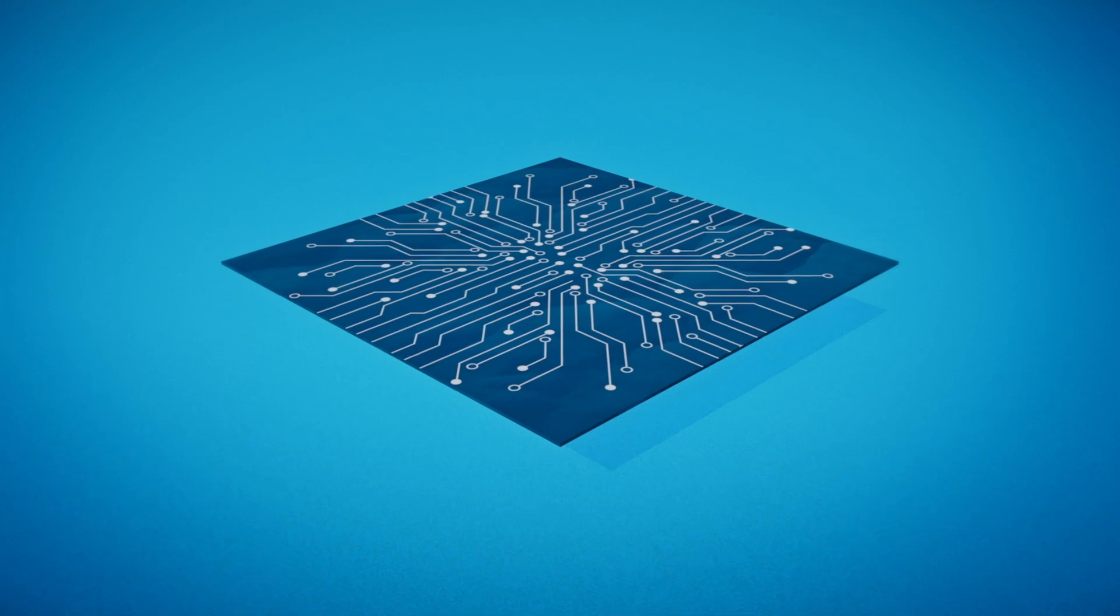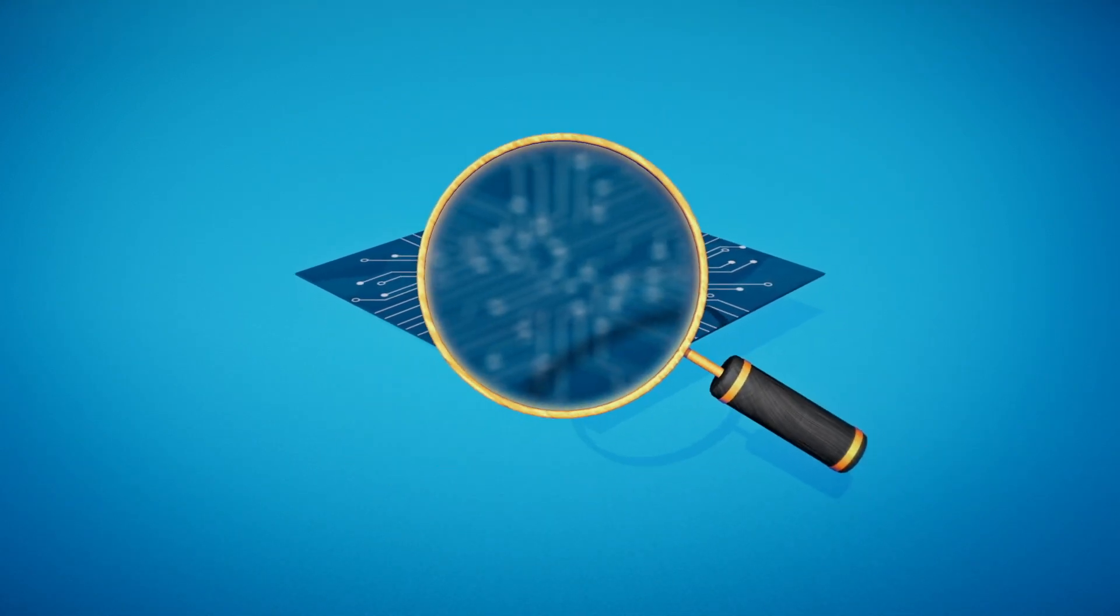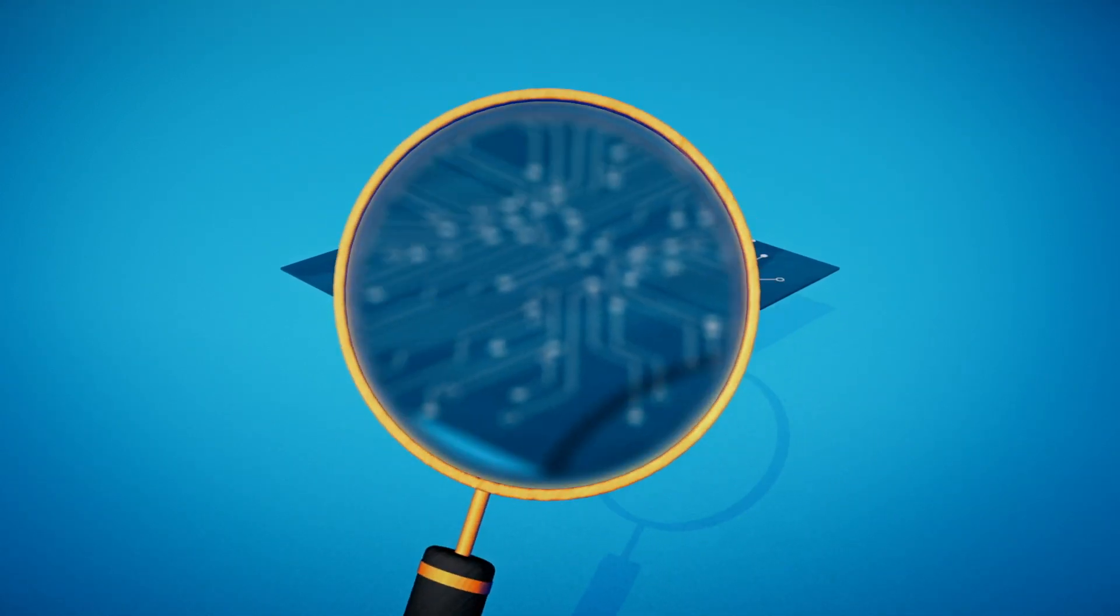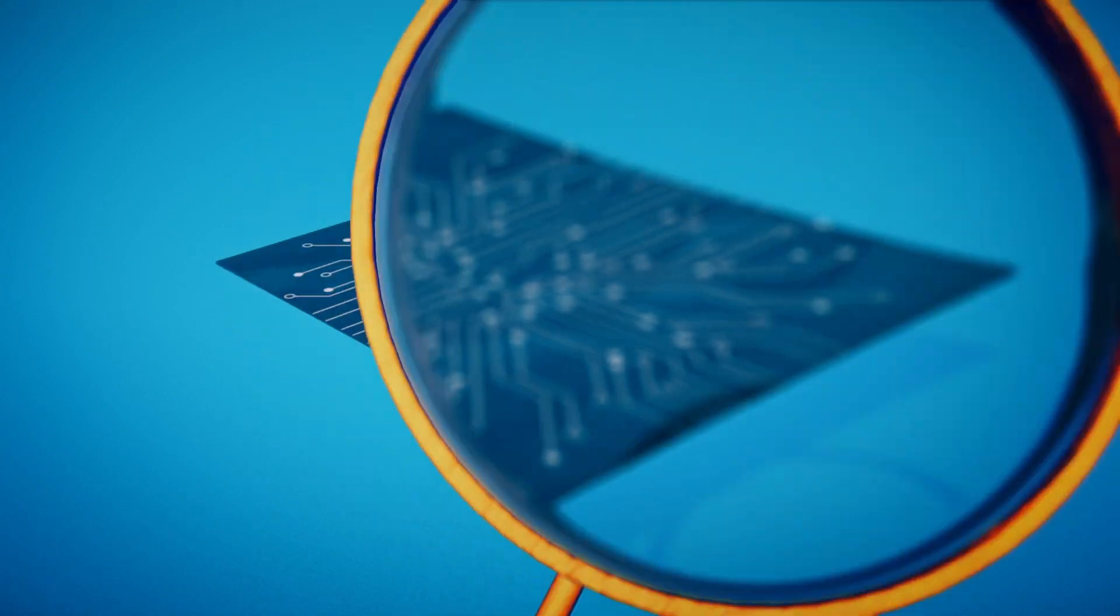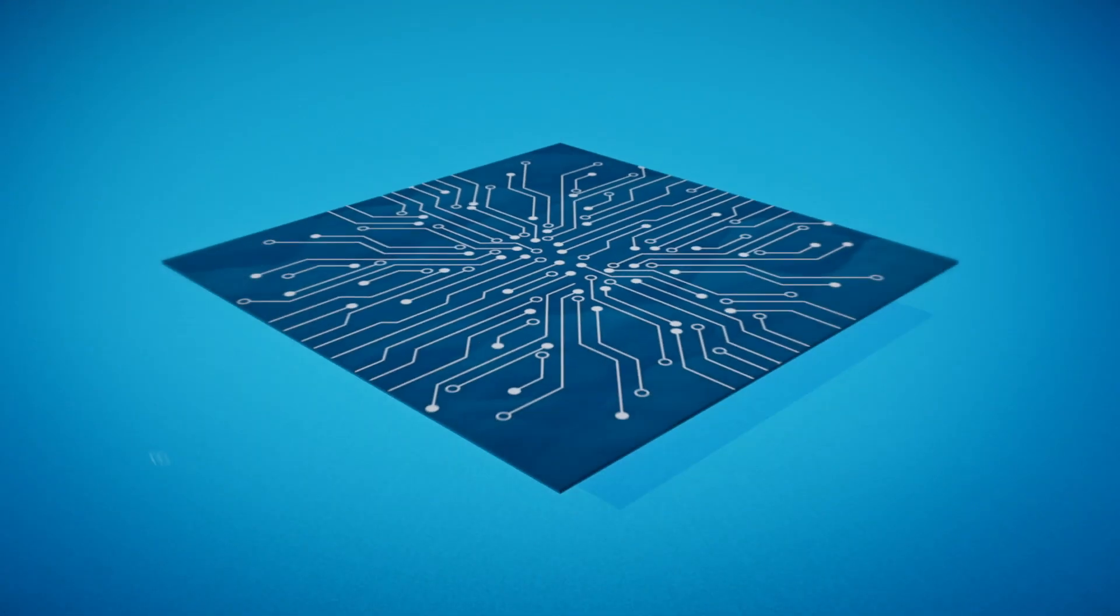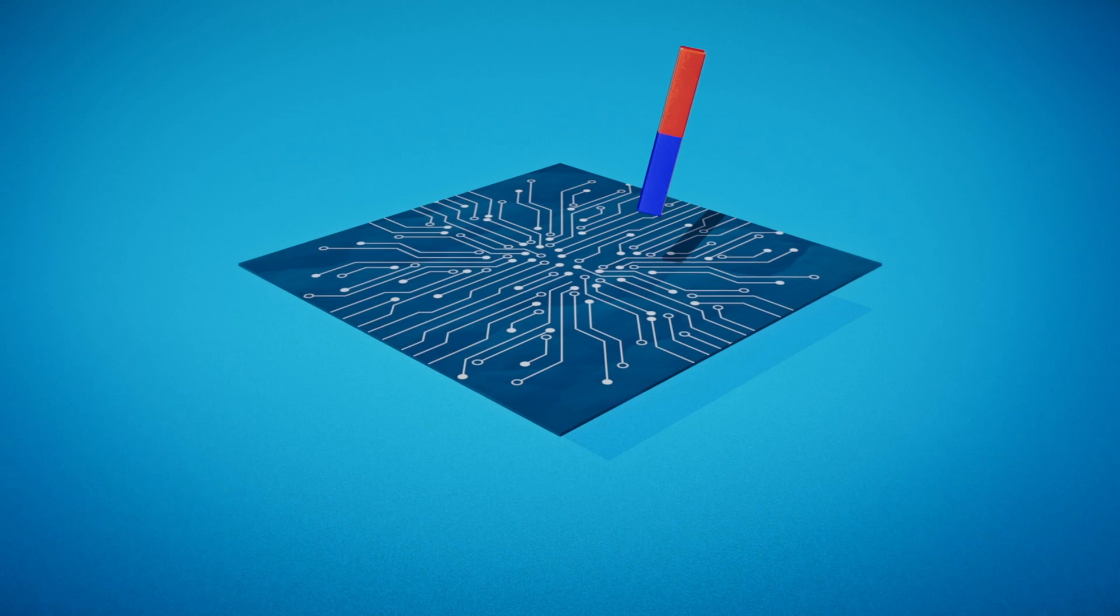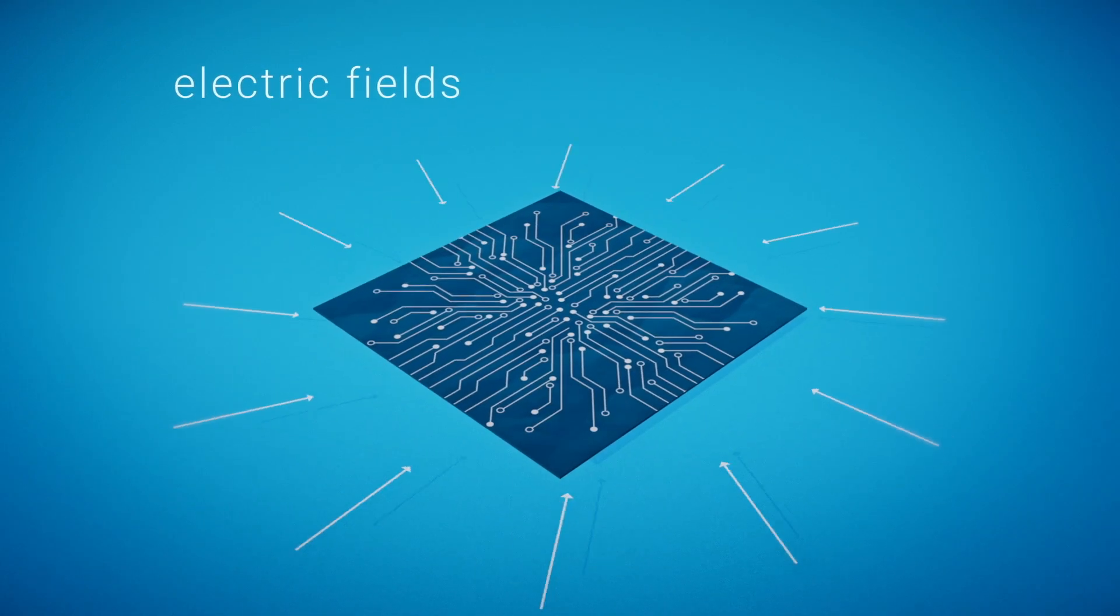As material scientists, the properties of surfaces are often very relevant, but getting quantitative data is difficult. This is especially true at the nanometer scale and when we're interested in magnetic fields, currents, or electric fields.